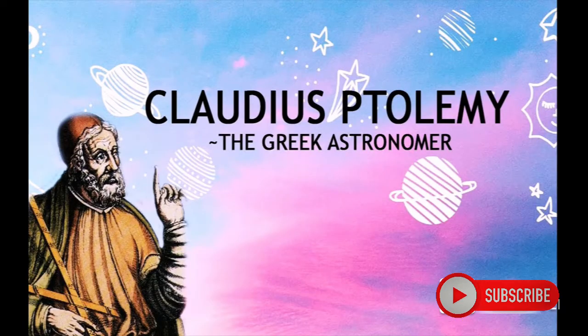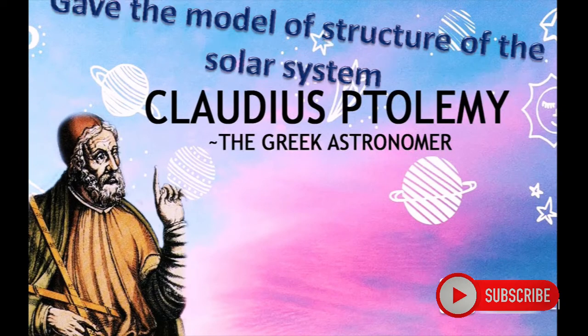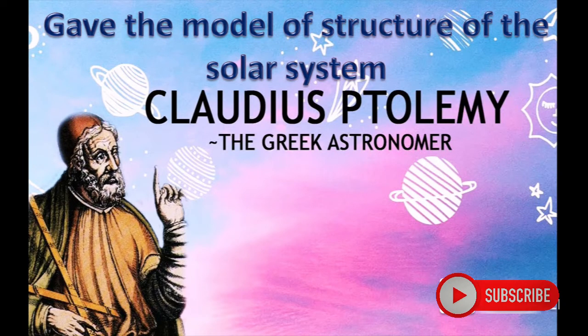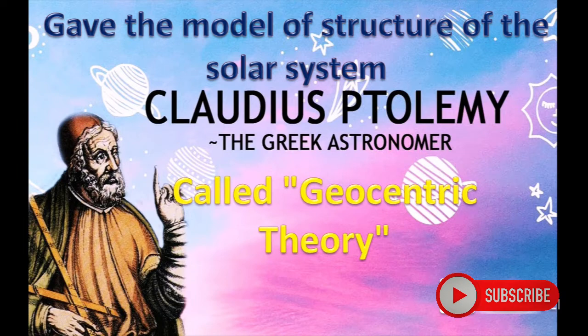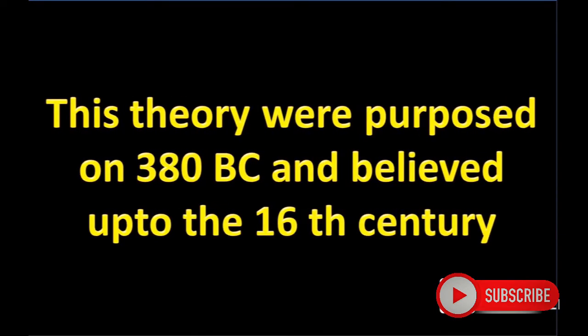Claudius Ptolemy, the Greek astronomer, gave a model of the structure of the solar system called geocentric theory. This theory was proposed in 380 BC and believed up to the 16th century.